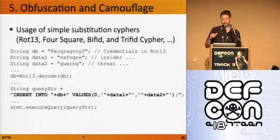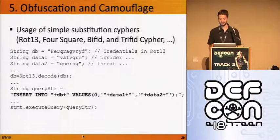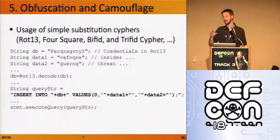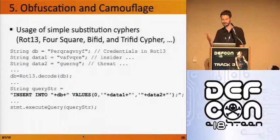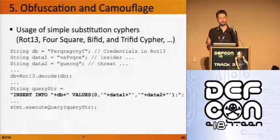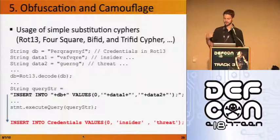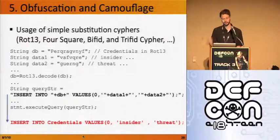Another obfuscation technique is using simple substitution ciphers like ROT13, foursquare, or Beaufort. In one example, an attacker wanted to insert into a credentials database but hide the database name and values. They declared vague variable names — 'database', 'data', 'data2' — and encoded them with ROT13, which requires only about six lines of code to implement. What this was actually doing was inserting the username 'insider' and password 'thread' into the credentials database. It was much harder to track down for a manual auditor than the plain version.